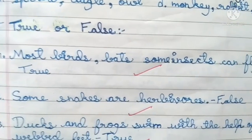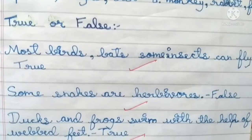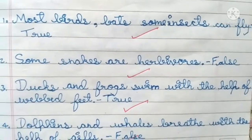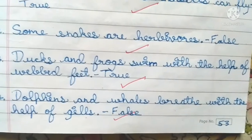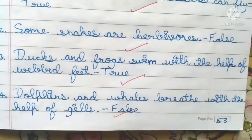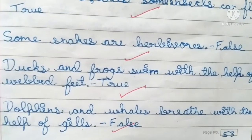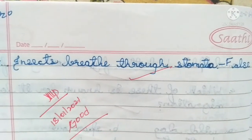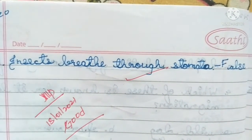True or false: Most birds, bats and some insects can fly — True. Some snakes are herbivorous — False. Ducks and frogs swim with the help of webbed feet — True. Dolphins and whales breathe with the help of gills — False. Insects breathe through stomata — False.